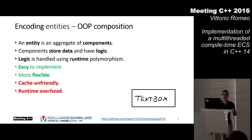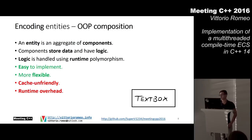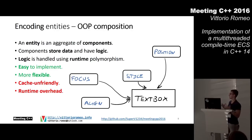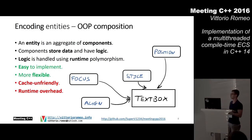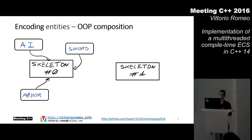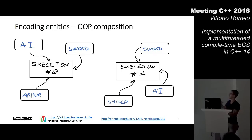A better solution is using OOP composition. An entity is just an aggregate of components; the components store data and logic is still handled using runtime polymorphism with virtual functions. So a text box entity might have a position component, a style component, a focus component, and an align component. This is still easy to implement and more flexible — we don't have the diamond inheritance problem. But it's still not cache-friendly because we can't use contiguous storage and everything is allocated on the free store.